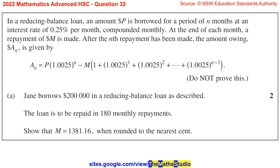Do not prove this. Part A. Jane borrows $200,000 in a reducing balance loan as described. The loan is to be repaid in 180 monthly repayments. Show that M equals $1,381.16 when rounded to the nearest cent.